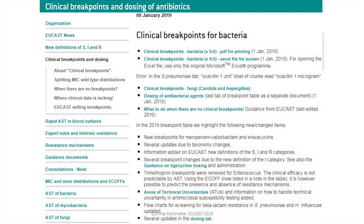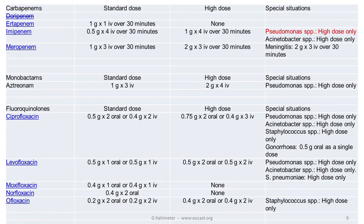This is what the dosing table looks like. The agents are in the left-hand margin. Standard dose is in the next column. High dose, or high exposure if you like, in the next column. And then at the far right, a column which lists specific situations and caveats that you need to have in mind when interpreting the dosing table.